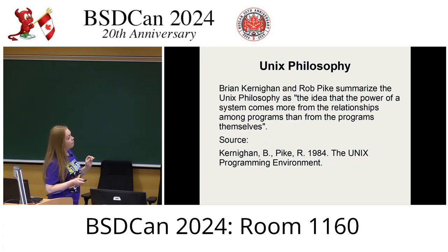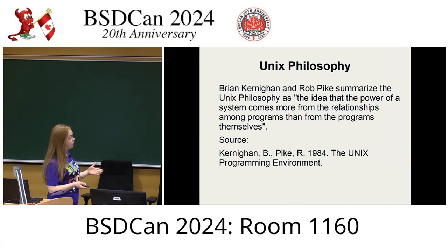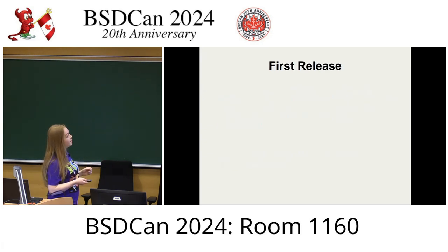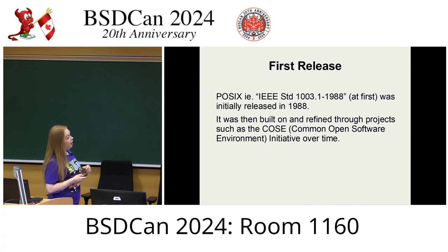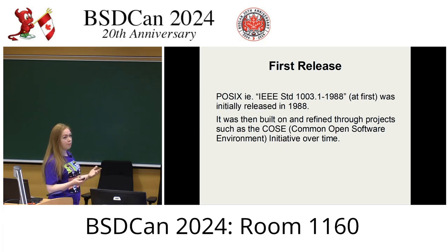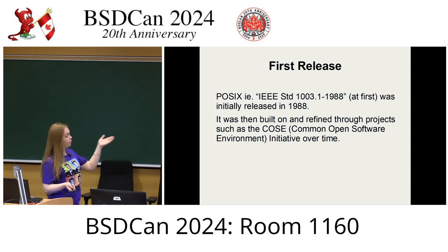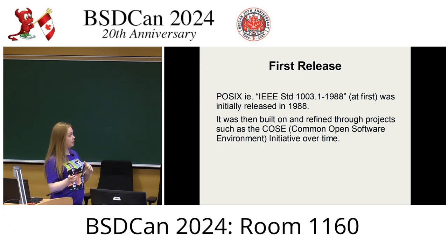Brian Kernighan and Rob Pike summarized the Unix philosophy as the idea that the power of a system comes from the relationships among programs rather than from the programs themselves. The first release of POSIX was in 1988, produced out of this contention with Microsoft, and was then built on and refined through multiple projects — including COSE, the Common Open Software Environment, which started in the 1990s and helped to refine POSIX over time.